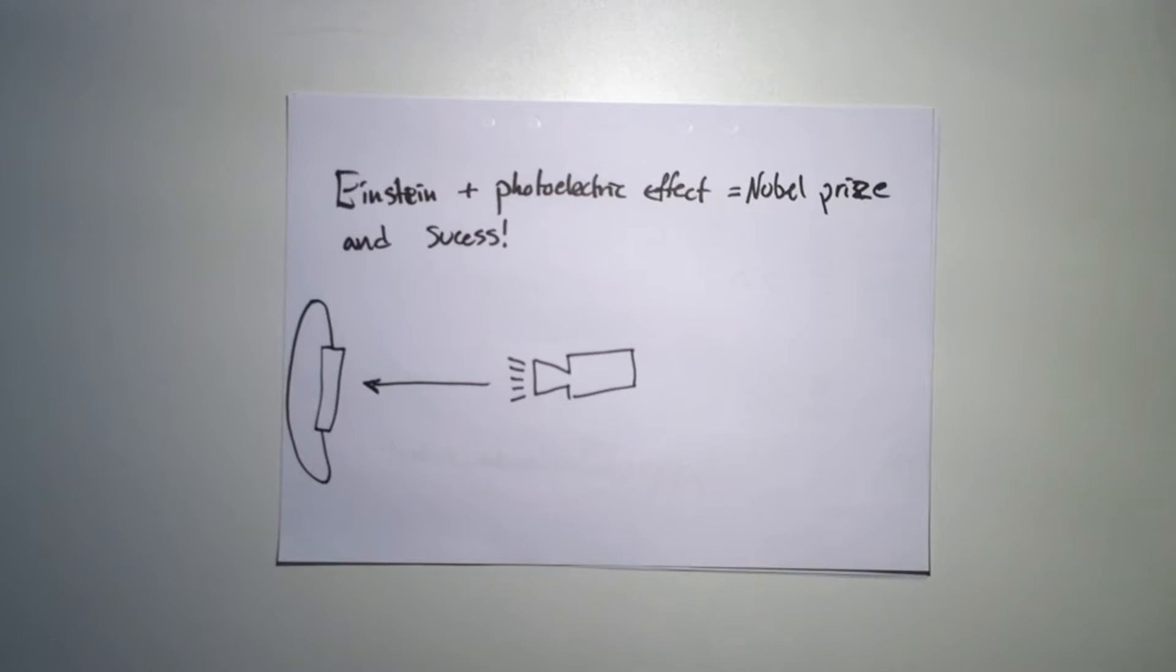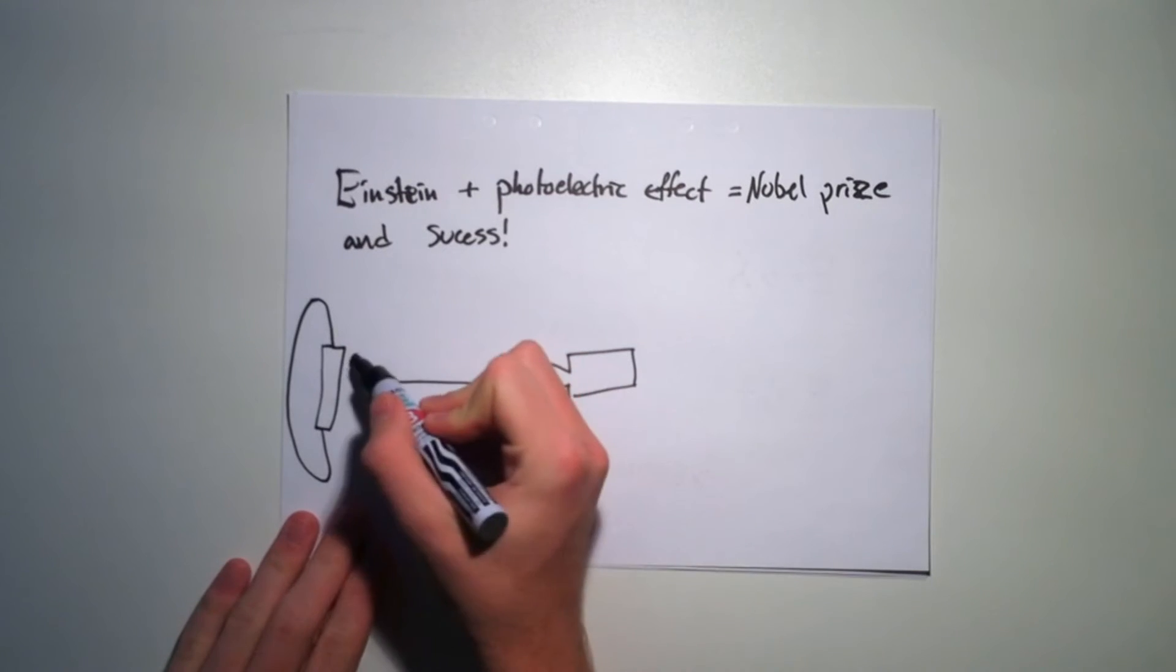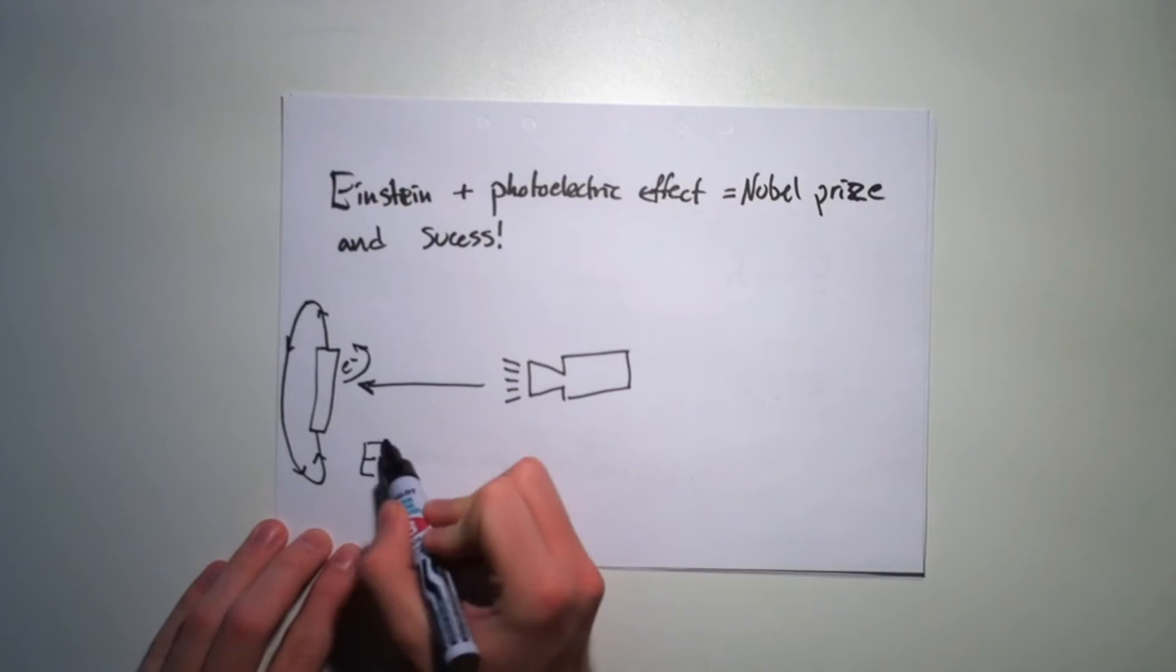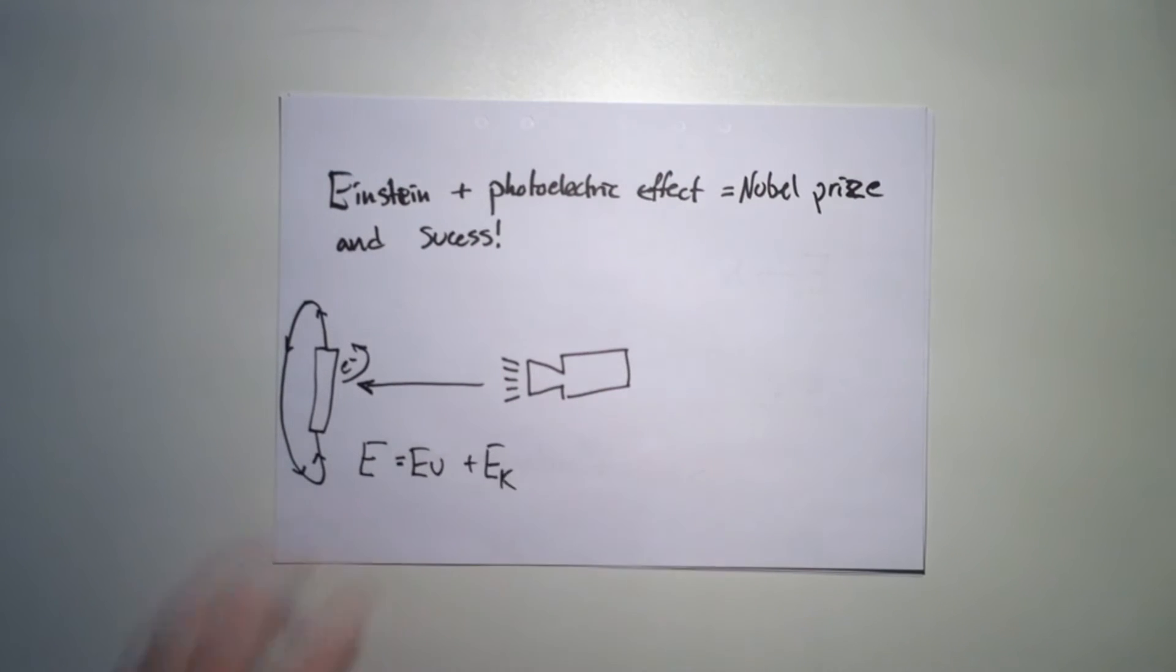But how? When we light the steel with high energetic light, the electrons in the steel are getting ripped off, so they leave the steel described by this equation, E equals EU plus EK.